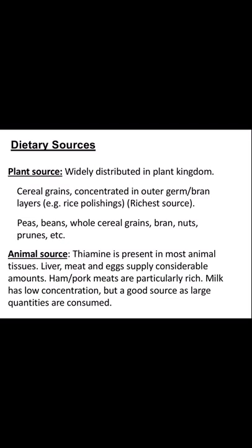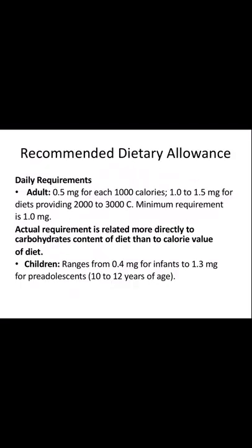Milk has a low concentration of thiamine, but because we consume it in large quantities, it becomes a good source. The recommended dietary allowance (RDA) for adults is 0.5 mg per thousand calories. A person requiring 3,000 calories needs 1.5 mg of thiamine. In children, it ranges from 0.4 mg for infants to 1.3 mg for pre-adolescents aged 10–12 years.